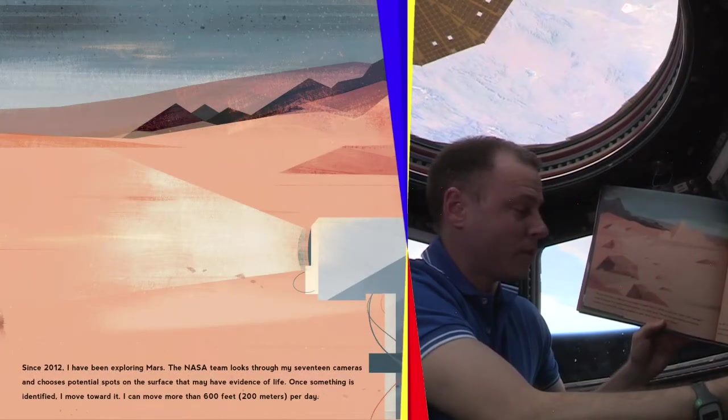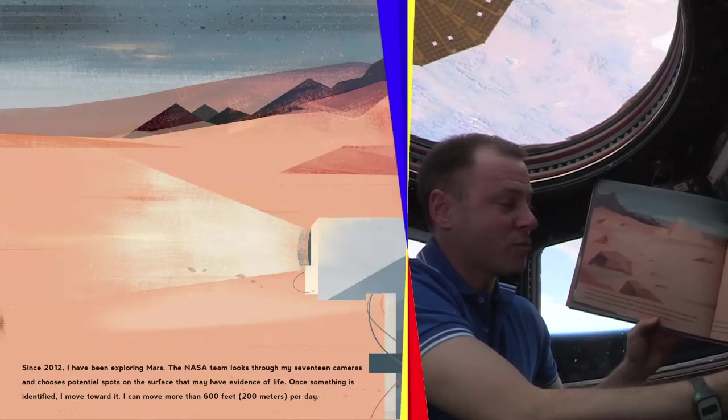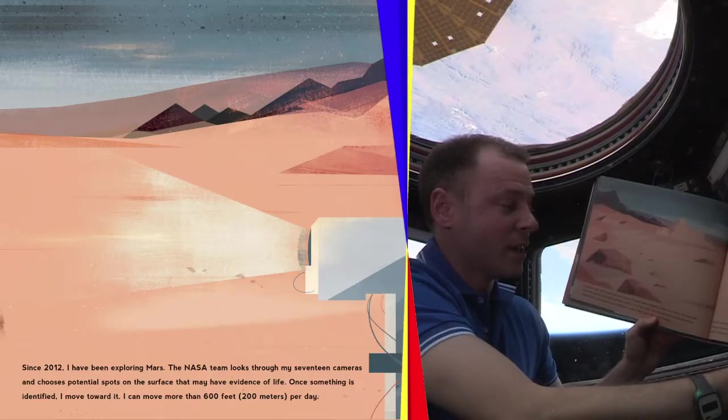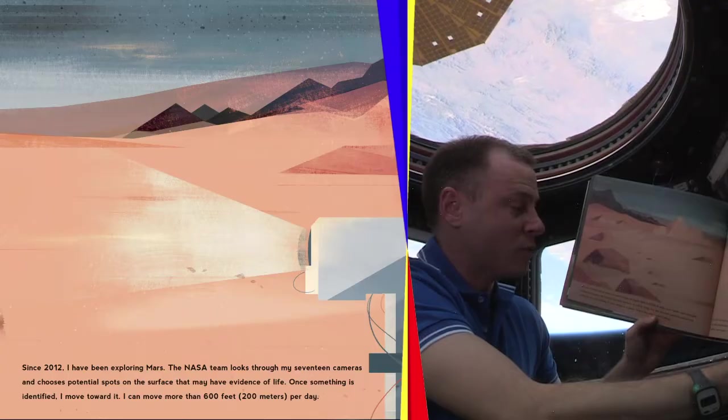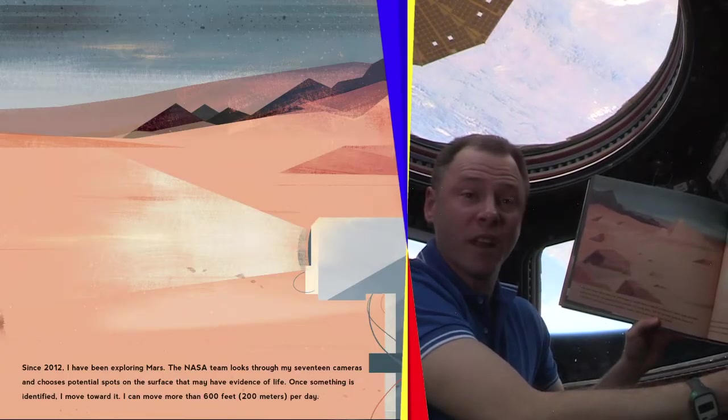Since 2012, I've been exploring Mars. The NASA team looks through my 17 cameras and chooses potential spots on the surface that may have evidence of life. Once something is identified, I move toward it. I can move more than 600 feet per day.